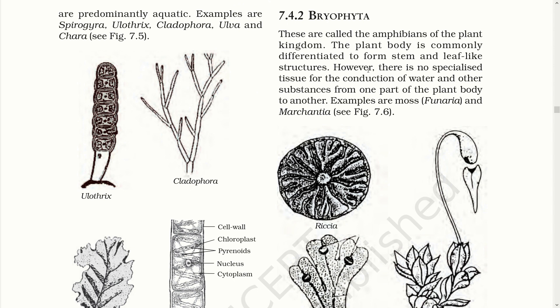Then we have the next division, Bryophyta. These are called amphibians of the plant kingdom. The plant body is commonly differentiated to form stem and leaf-like structures. However, there is no specialized tissue for the conduction of water and other substances from one part of the plant body to another. Examples are Moss and Marchantia.